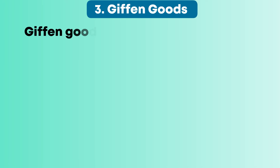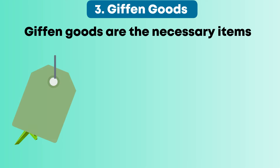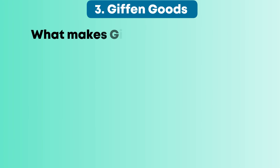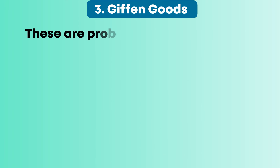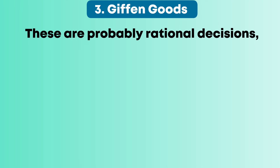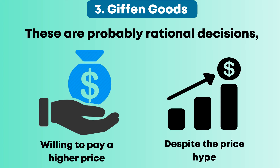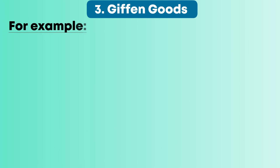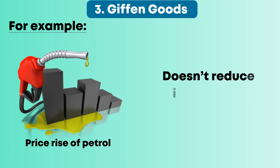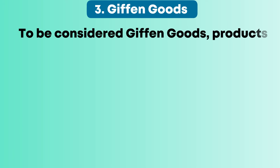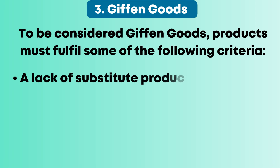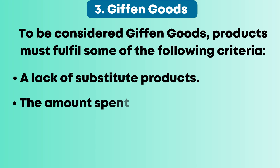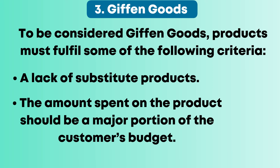Three, Giffen goods. Giffen goods are the necessary items whose price rise doesn't affect the demand. What makes Giffen goods unique is the price and demand equation — buyers are willing to pay a higher price despite the price hike. For example, the price rise of petrol doesn't reduce its demand. To be considered Giffen goods, products must fulfill some criteria: lack of substitute products, and the amount spent on the product should be a major portion of the customer's budget.